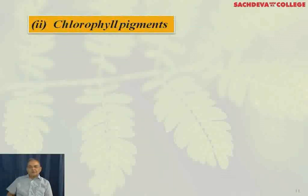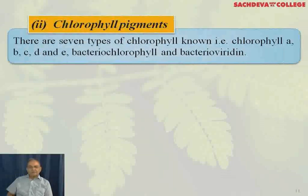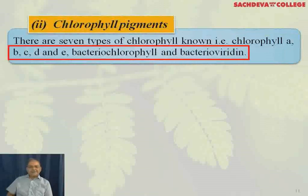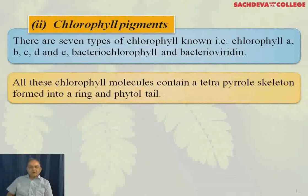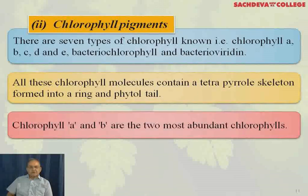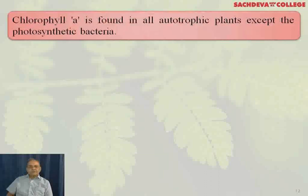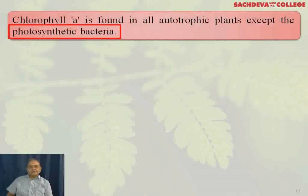Chlorophyll pigments play a very important role. There are seven types of chlorophyll known: chlorophyll A, B, C, D, E, bacteriochlorophyll, and bacterioviridin. All these chlorophyll molecules contain a tetrapyrrole skeleton formed into a ring and a phytol tail. Chlorophyll A and B are the two most abundant chlorophylls. Chlorophyll A is found in all autotrophic plants except photosynthetic bacteria.